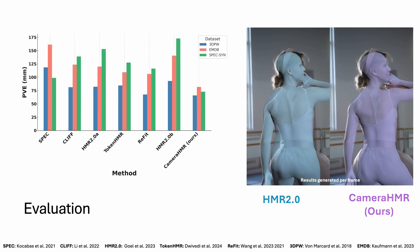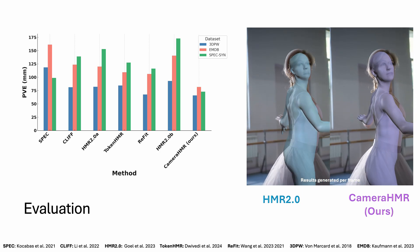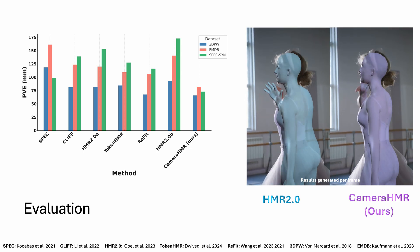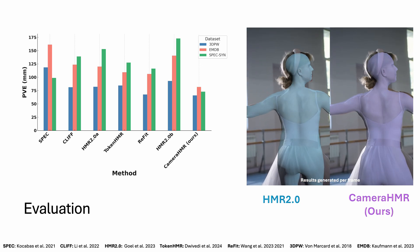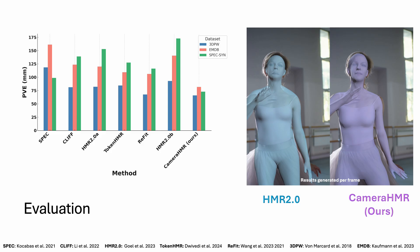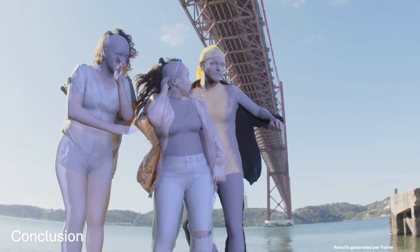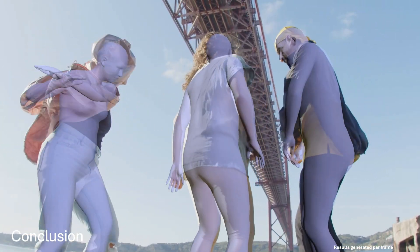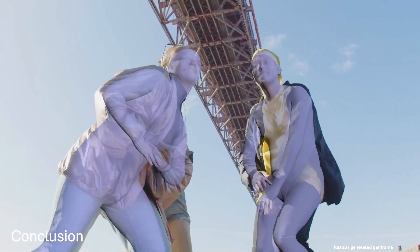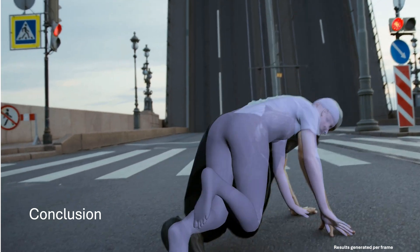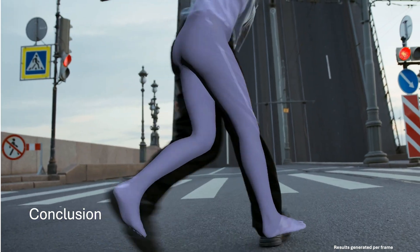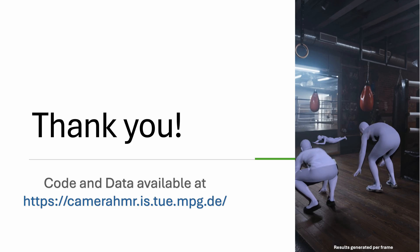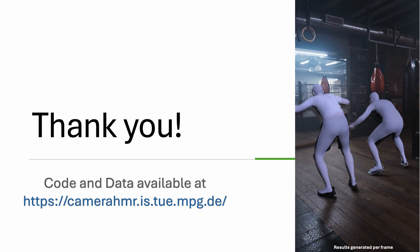CameraHMR, trained with accurate camera intrinsics, helps achieve state-of-the-art performance across multiple benchmarks on 3D pose and shape metrics. The results not only provide better 3D reconstruction, but also much better 2D alignment compared to other methods. In conclusion, CameraHMR enhanced with accurate camera intrinsics, predicted by our HumanFOV model, significantly improves 3D human pose and shape estimation, as well as 2D alignment. By generating high-quality pseudo-ground truth data and refining the model iteratively, CameraHMR achieves state-of-the-art performance across multiple benchmarks. This demonstrates the critical importance of correct camera calibration in 3D human reconstruction.